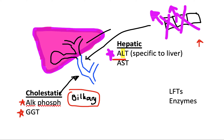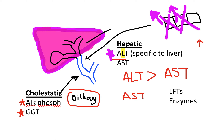It also matters whether ALT is increased more than AST, or whether AST is increased more than ALT. In the case of ALT increased more than AST, this is liver-specific and often indicates hepatitis — commonly viral hepatitis.